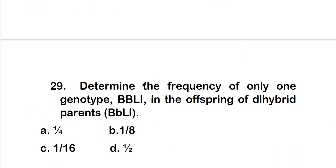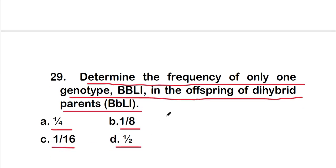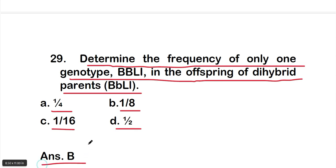Question 29: Determine the frequency of only one genotype — capital B capital B capital L small l — in the offspring of dihybrid parents (capital B small b capital L small l). Options are 1/4, 1/8, 1/16, or 1/2. The right answer is option B — 1/8.